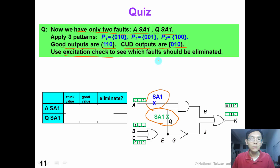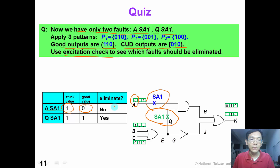Are you ready for the answers? For A stuck-at-1, the stuck-at value is 1 and the good value in the first pattern is 0. These two values are not the same, so A stuck-at-1 could be a true candidate. However, for Q stuck-at-1, the stuck-at value is 1 and the good value is also 1, so this fault cannot be a true candidate and we can eliminate Q stuck-at-1.